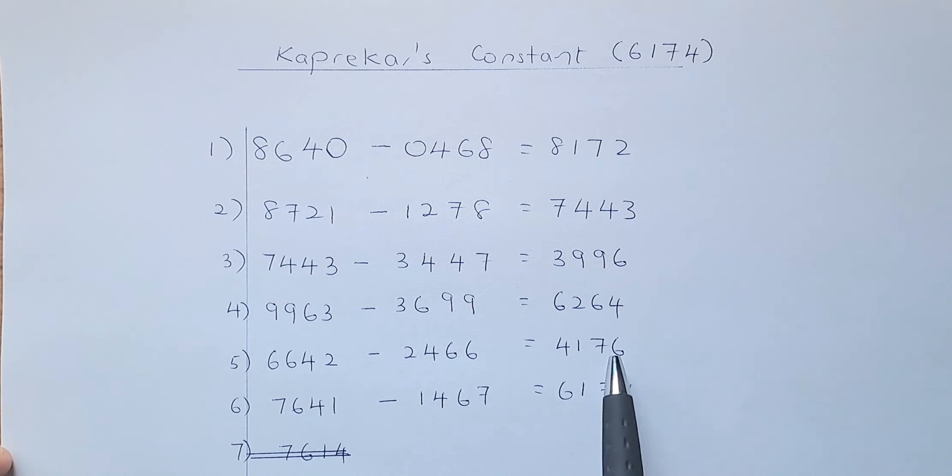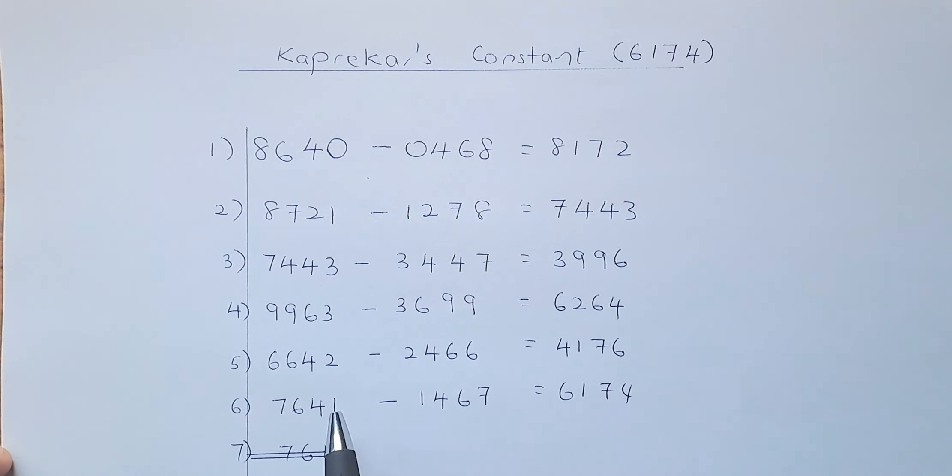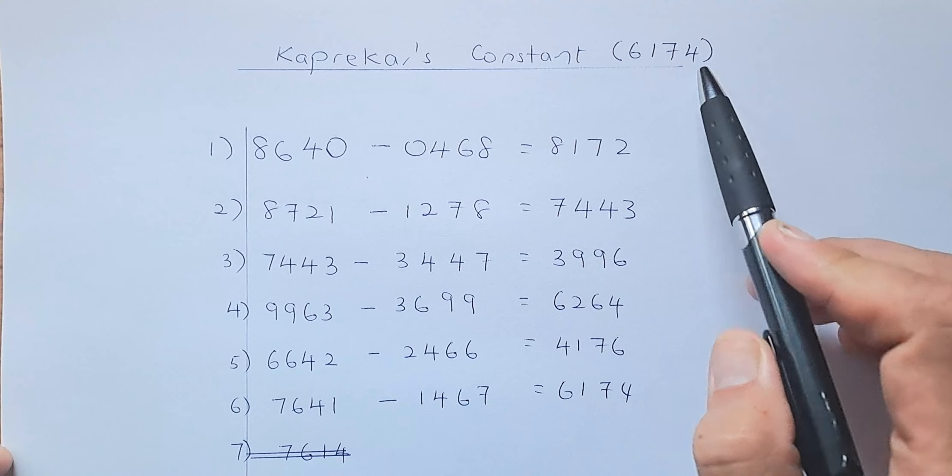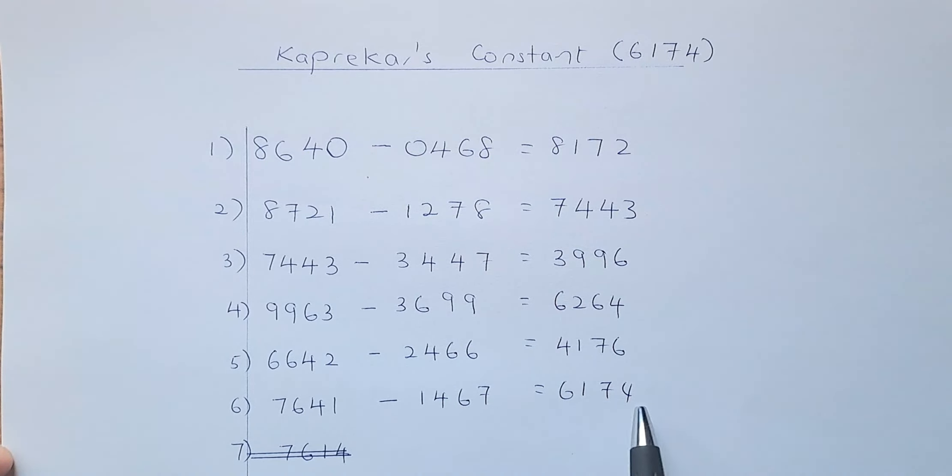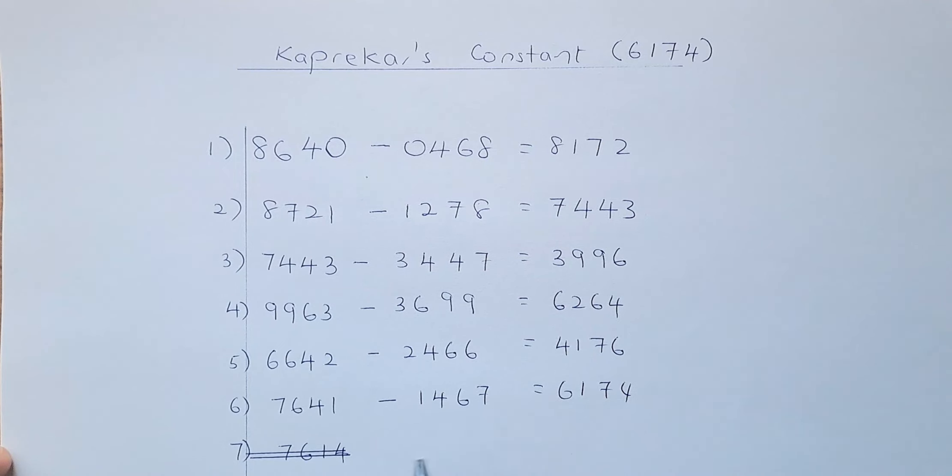Last but not least, 4176, you'll arrange from biggest to smallest, it's going to be 7641. And you minus from smallest to biggest, it's 1467. And you're going to get 6174, that is the Capricus constant. If you rearrange 6174, it's going to be 7641 again. And this will always end with 6174.